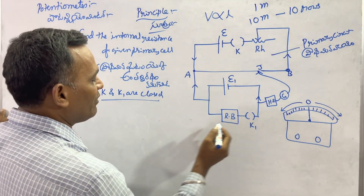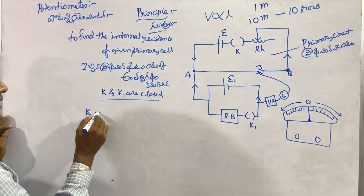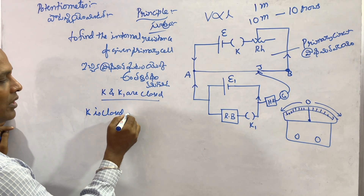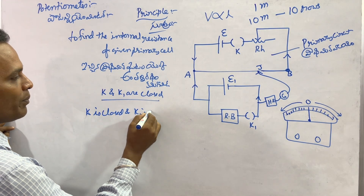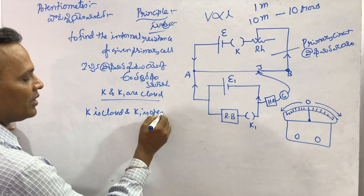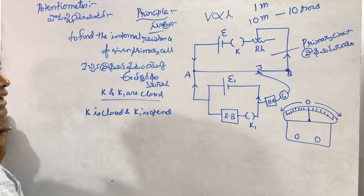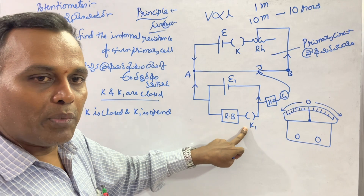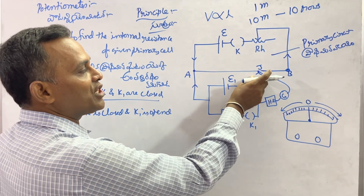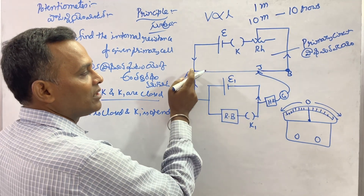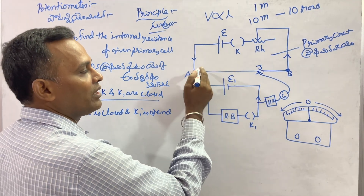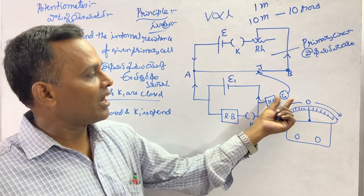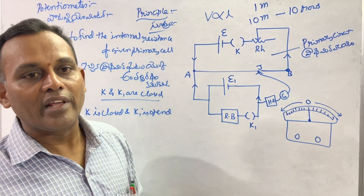Now for the practical procedure: K1 is open and K is closed. The jockey is then pressed from A to B at different points along the wire.